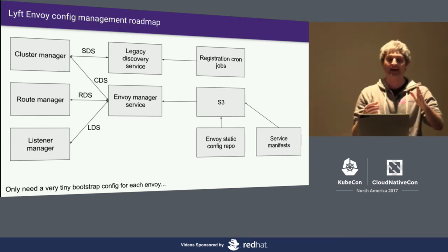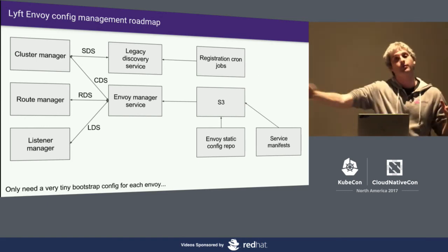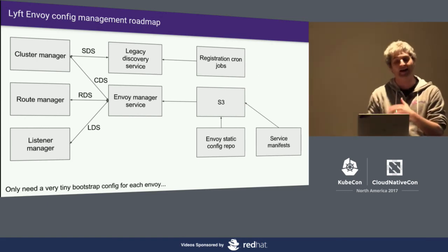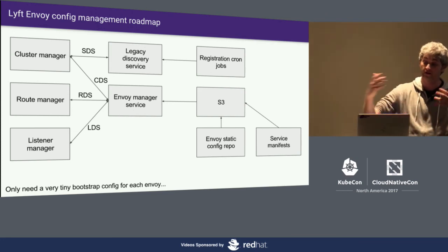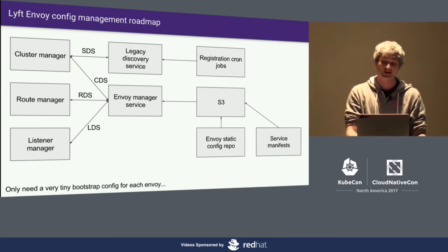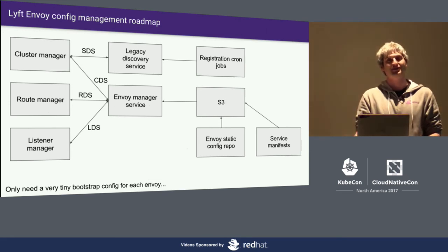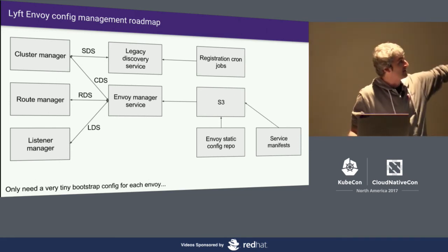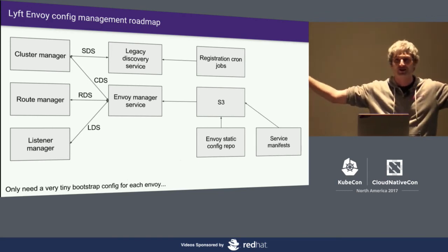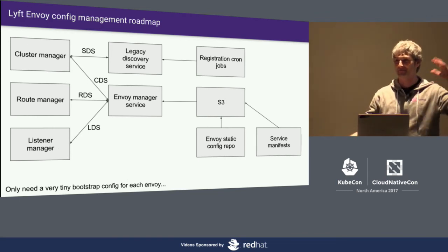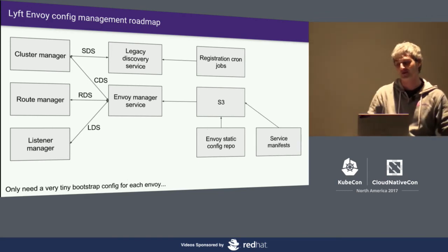This is roughly what it looks like today — we have our legacy 100-line Python service discovery, and a new service called Envoy Manager, similar to Istio Pilot. We take information from our legacy infrastructure, cron jobs, and manifests, merge them together, and send configuration to Envoys. Over time the config we ship to every host is getting smaller and smaller until it becomes a unified bootstrap config that runs on every host, never changes, and everything else comes from management servers. And we're now beginning our Kubernetes migration, which will get more complicated as we juggle legacy infrastructure and Kubernetes together.